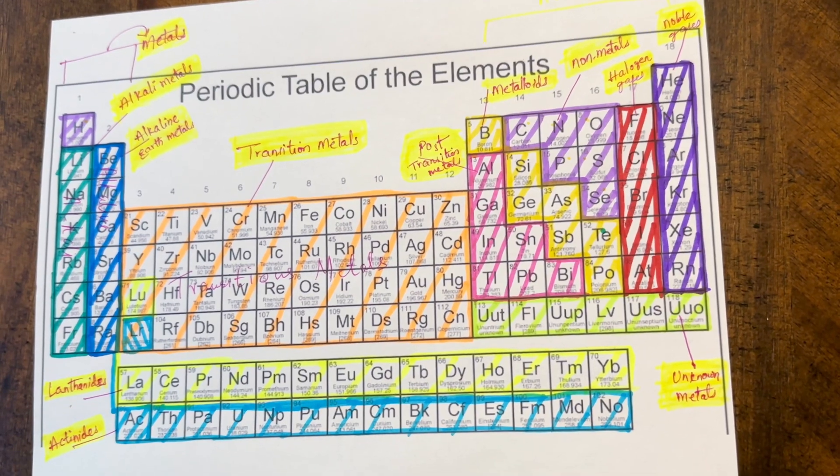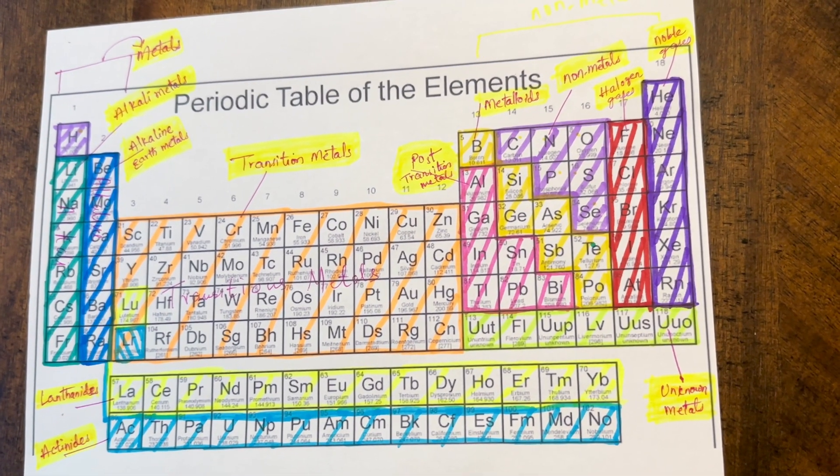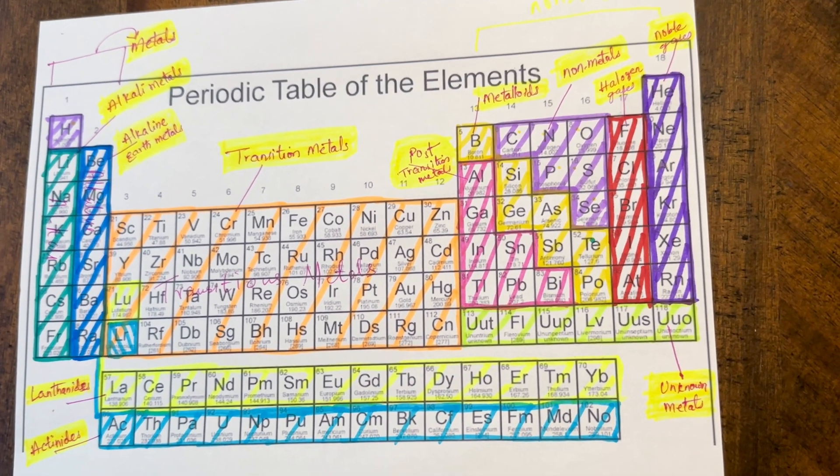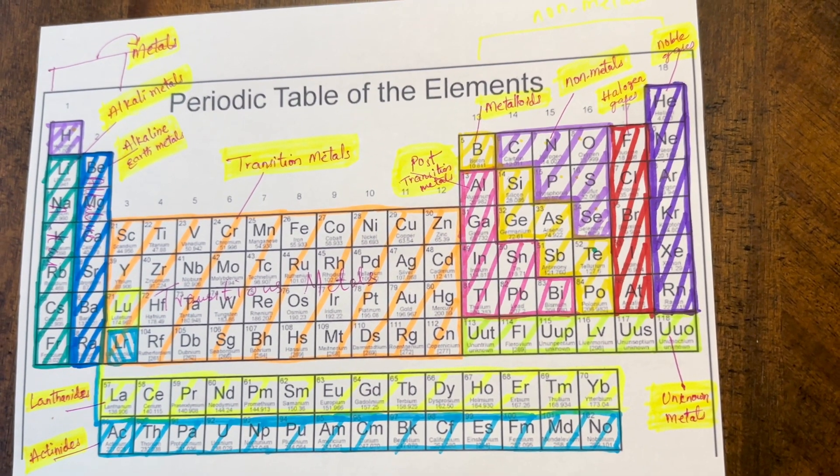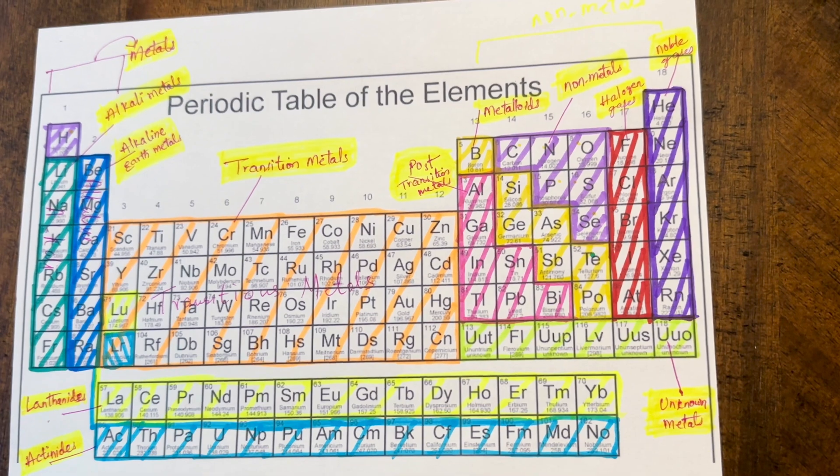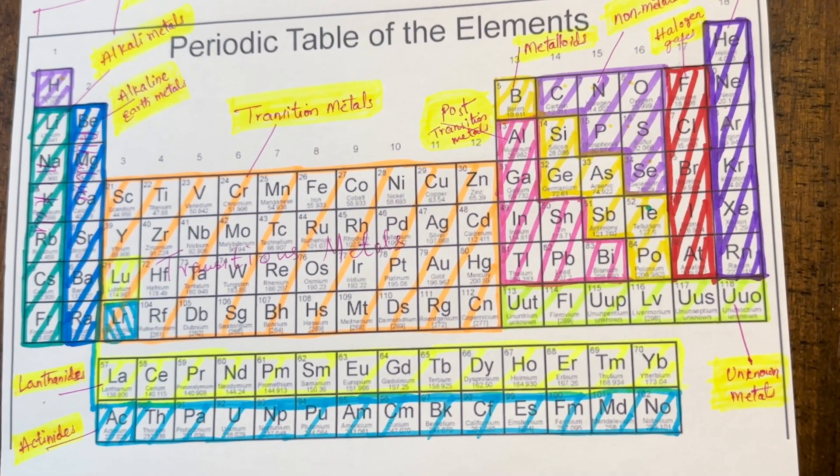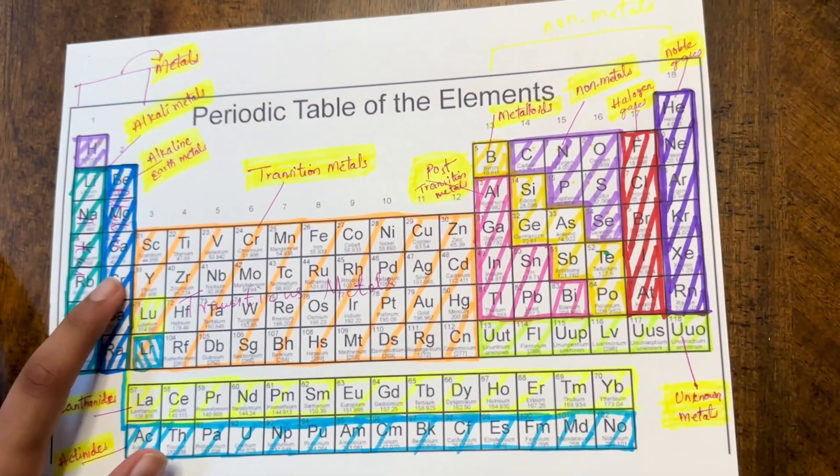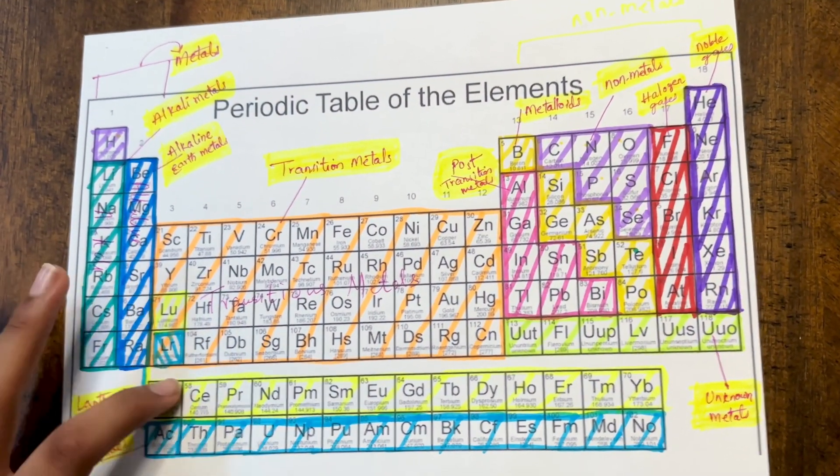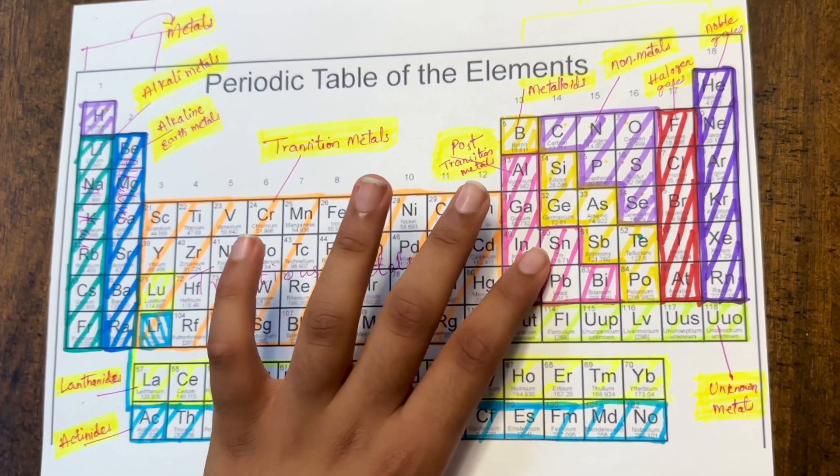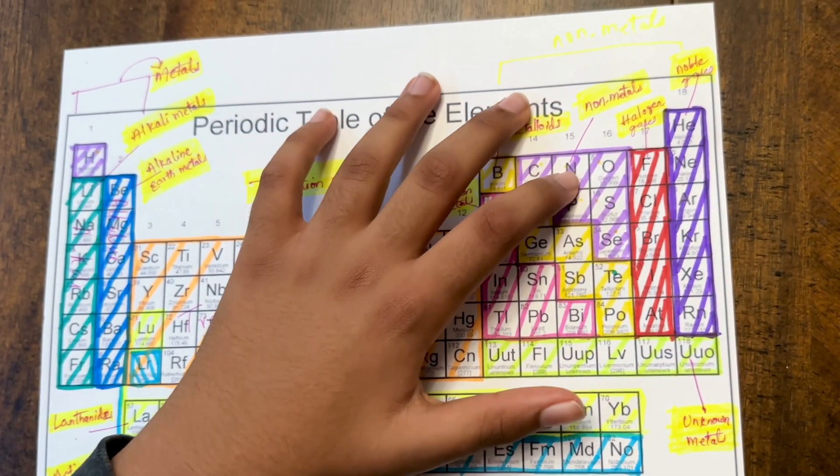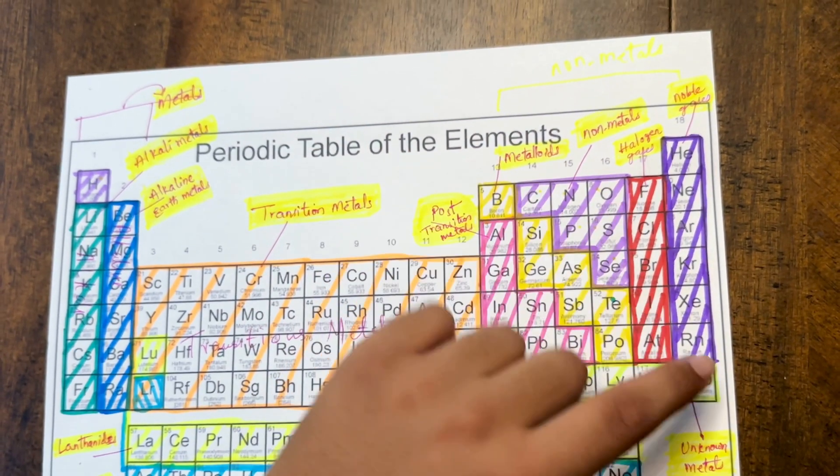The periodic table of elements is categorized into different groups that each contain similar properties on how they react to other elements and what their purpose is in our world. As you can see, there are many groups classified in our periodic table, each having a special meaning: alkali, alkaline earth metals, transition metals, lanthanides, actinides, post-transition metals, unknown metals, metalloids, reactive non-metals, halogens, and noble gases. Thank you.